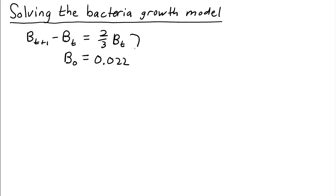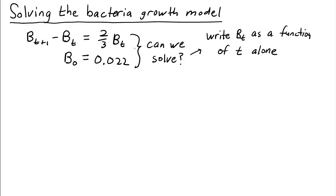The next question is: can we solve this dynamical system? What does it mean to solve? This means writing b_t as a function of t alone. In this dynamical system, we couldn't quickly tell what b_33 is — we'd have to iterate from 0 to 1 to 2 to 3. If we solve the system, we could immediately say we know what b_32 is.